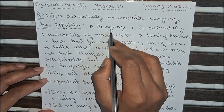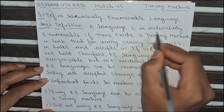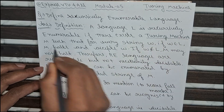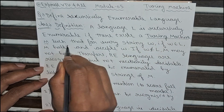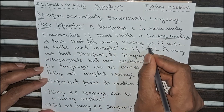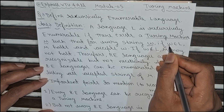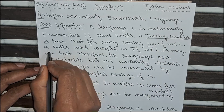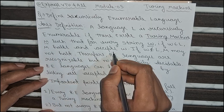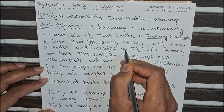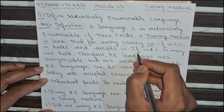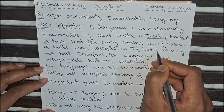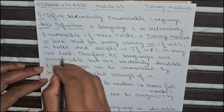The definition says that a language L is recursively enumerable if there exists a Turing machine M such that for every string W, where W is an element of L, M halts and accepts the string W. And there is a condition: if W is not belonging to the language, then M may not halt.